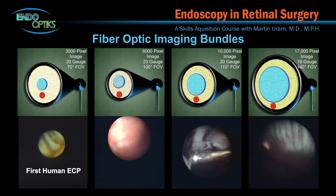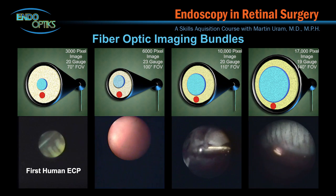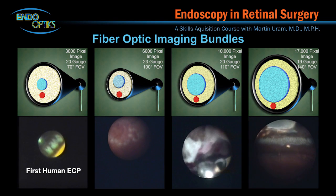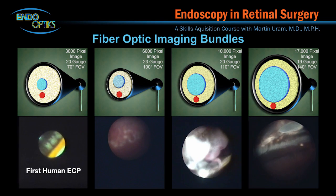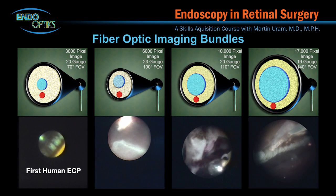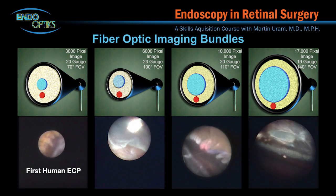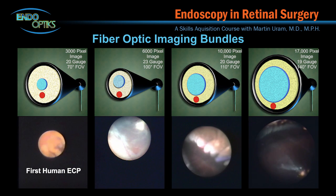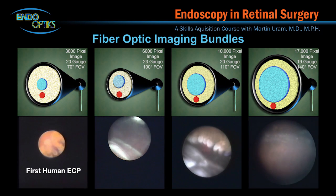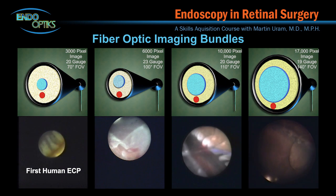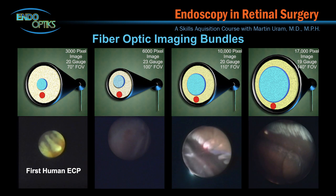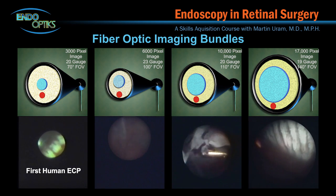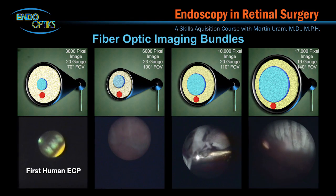The first human endoscopic cyclophotocoagulation, or ECP, was performed with a 3,000 pixel laser endoscope. As you can see from the original video, it achieved a certain level of resolution and, at best, a limited field of view. Since that time, advances in technology have expanded the range of imaging fibers. From the other videos here, you can see improved resolution and field of view depending upon the ultimate outer diameter of the laser endoscope.